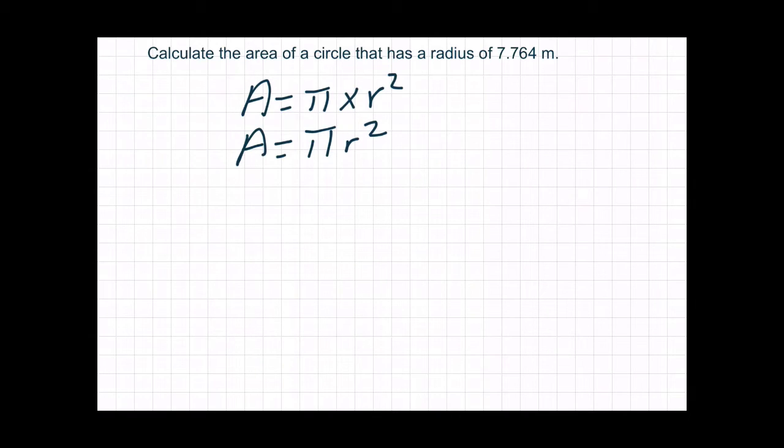The next thing we need to do is substitute our constants for our variables. So area equals pi, open bracket, 7.764 meters, and the square goes on the outside. And remember that this is our radius because it says so right here.